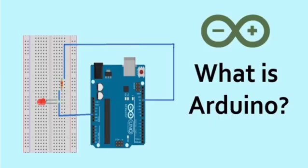So the first question is: what is Arduino? On your screen you can see a blue colored board with a few electronic components — this is what we call Arduino.